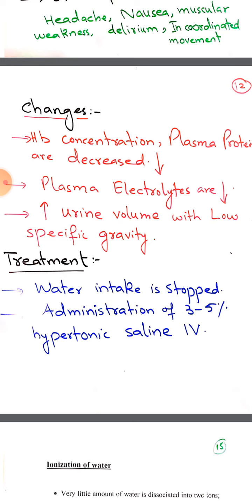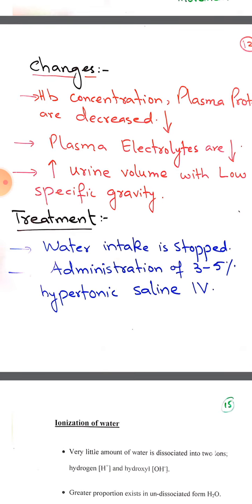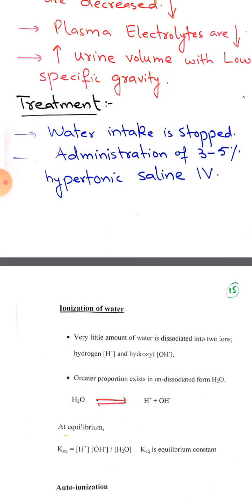Treatment of water intoxication: first, stop water intake as the body already has excess water. Then administer 3–5% concentrated hypertonic saline solution intravenously. Since sodium retains water, this electrolyte drags water and it is removed from the body during urination.